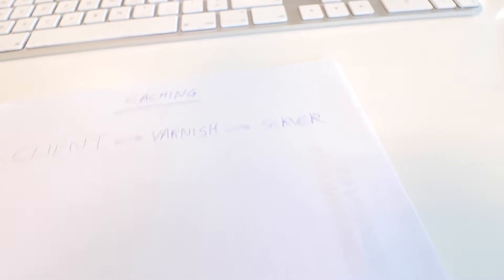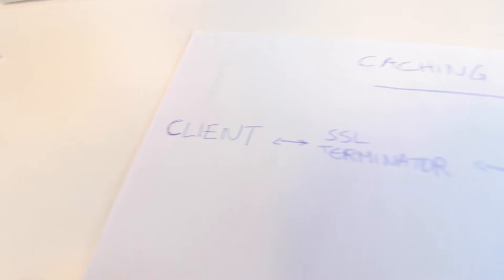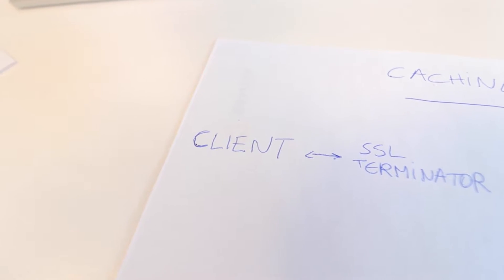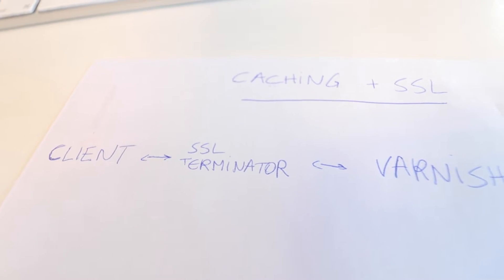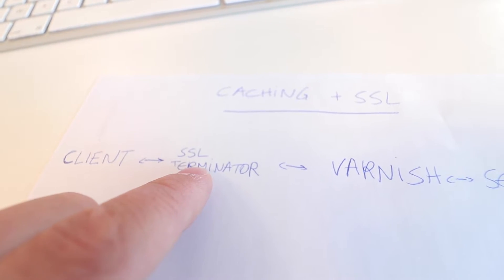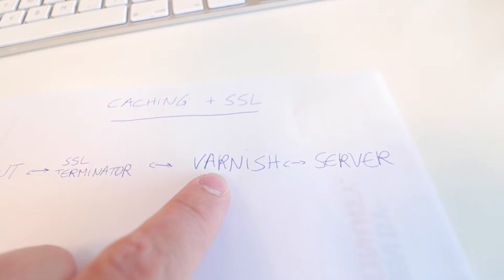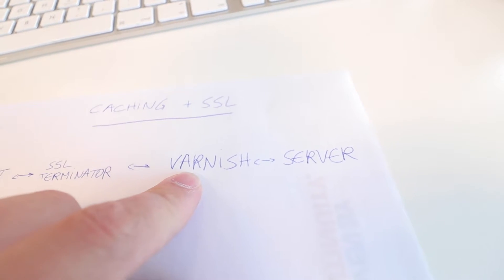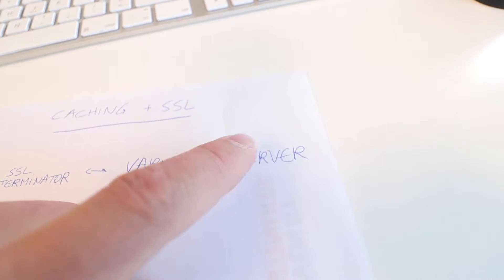But Varnish does not support SSL. When we want SSL in the mix, we have to add yet another layer. The browser connects to the SSL terminator, which terminates SSL using the certificates and communicates over plain old HTTP to Varnish. And Varnish uses plain old HTTP to the server.